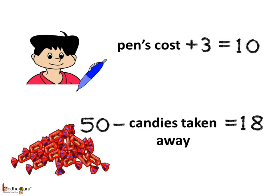Aman bought a pen and paid by giving a 10 rupee note. He got back 3 rupees. So we can say the pen's cost plus 3 rupees is equal to 10 rupees.